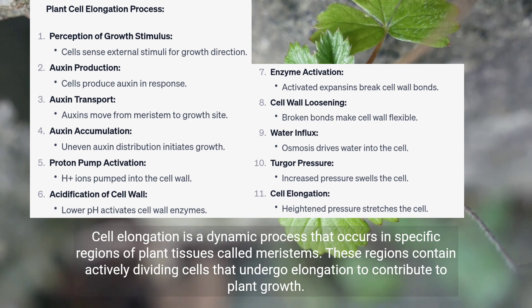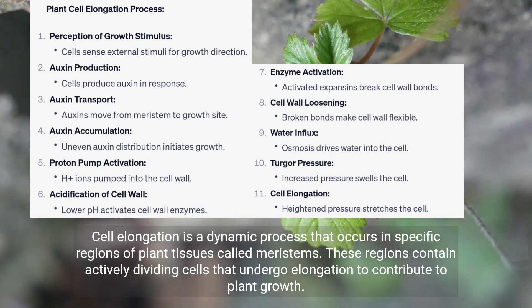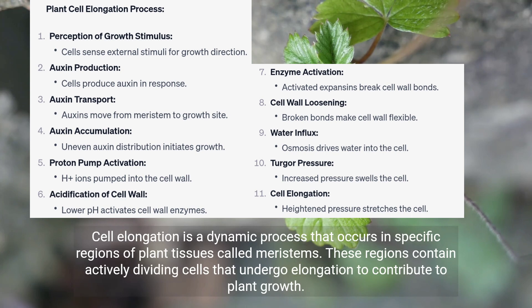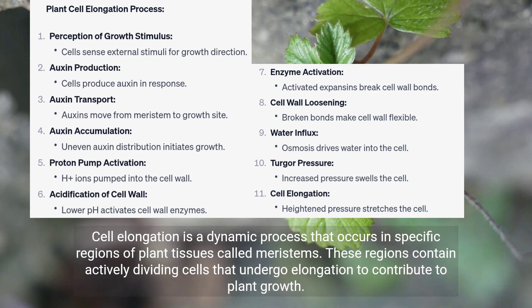Cell elongation is a dynamic process that occurs in specific regions of plant tissues called meristems. These regions contain actively dividing cells that undergo elongation to contribute to plant growth.